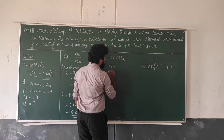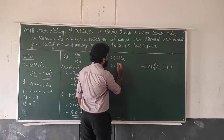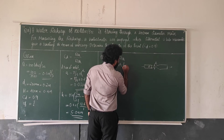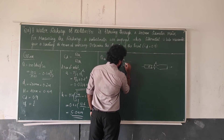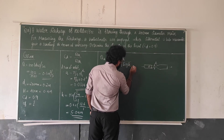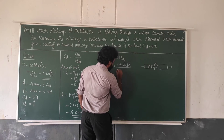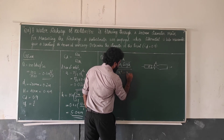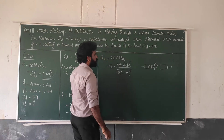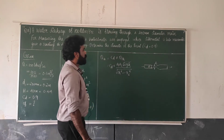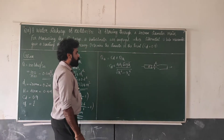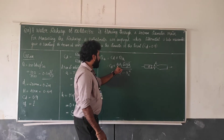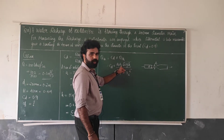CD into Q theoretical formula: Q equals CD into A1 times A2 times root of 2GH, divided by root of A1 squared minus A2 squared. Here A1 is the area of the inlet and A2 is the area of the throat.